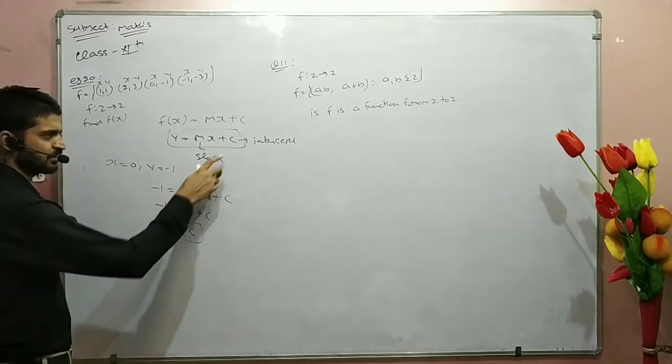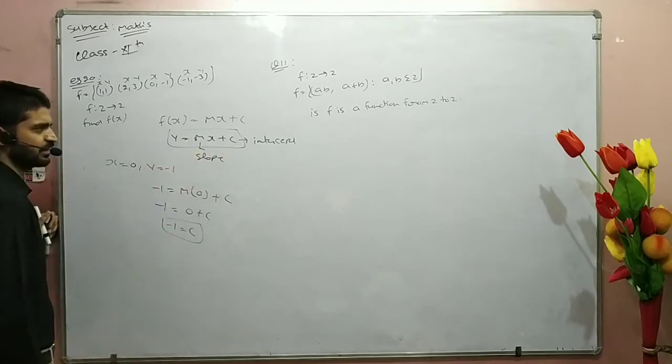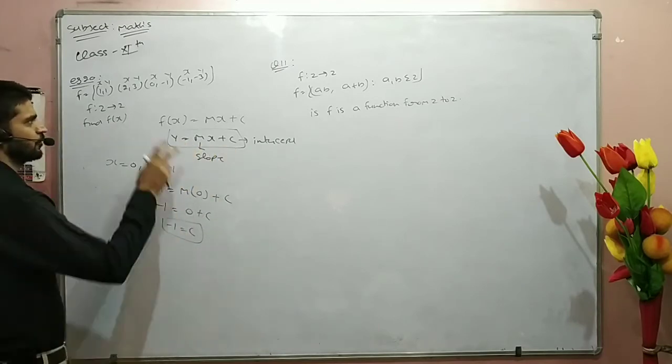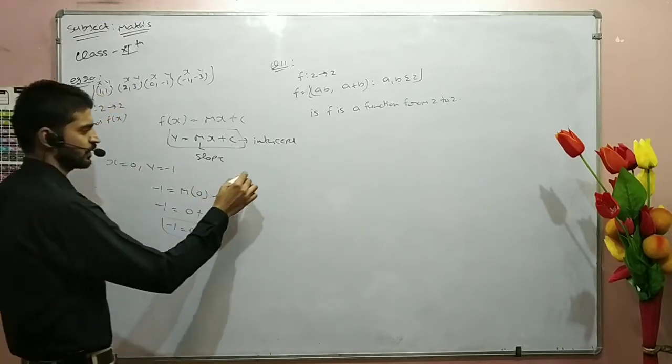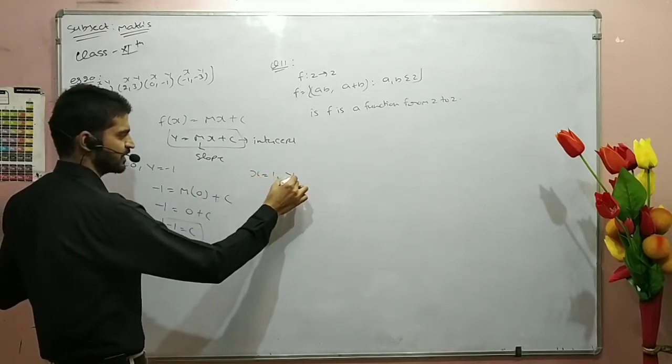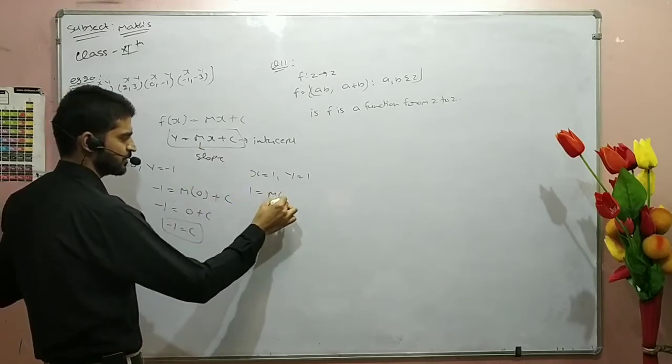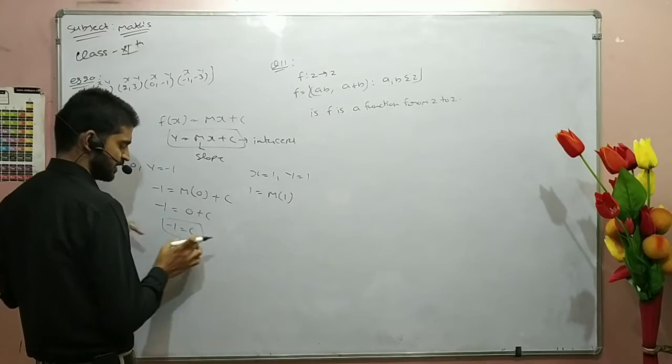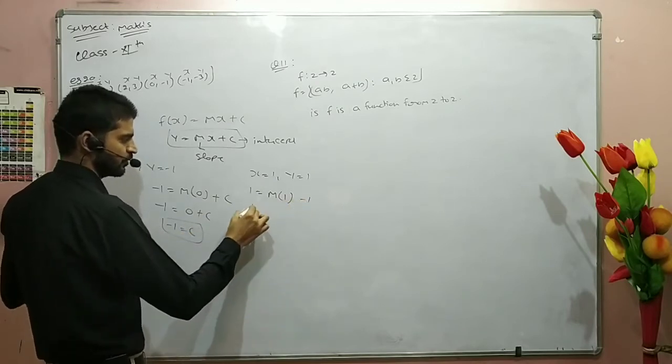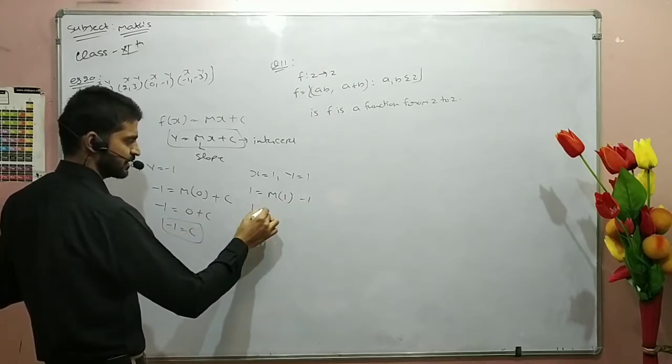Now we are going to put the c value and put the next value, the first value. For x, we put the value, and for y we put the value. Then c's value is -1.